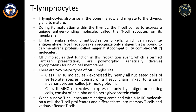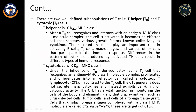MHC class I molecules are expressed in all nucleated cells; MHC class II molecules are present in antigen-presenting cells. Class I MHC molecules have two chains: alpha and beta chains. When a naive T cell encounters an antigen combined with an MHC molecule on a cell, it proliferates and differentiates into memory T cells and effector T cells. There are two types: T helper and T cytotoxic cells.